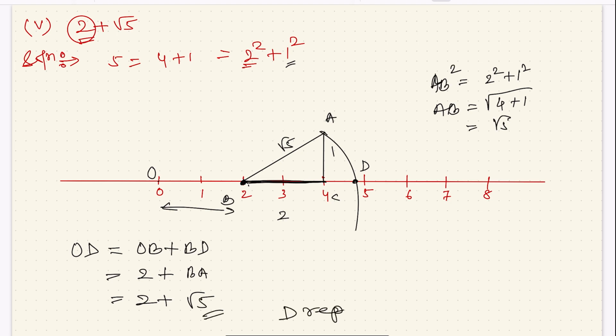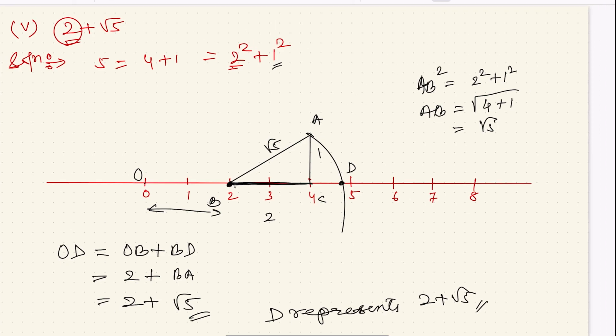So D represents 2 plus root 5. That's all. Thank you so much. We will meet in the next video.